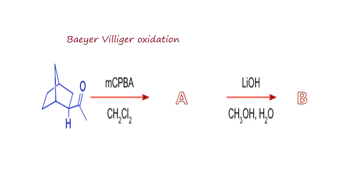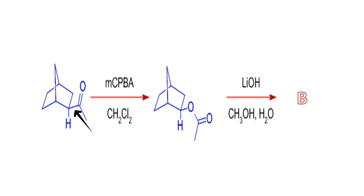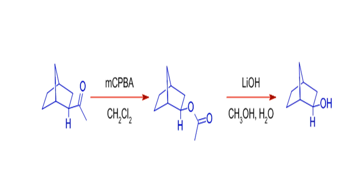The cyclic ring will migrate in preference to the methyl group, so that oxygen is inserted here to form this ester. Under basic conditions of lithium hydroxide, or any other hydroxide like NaOH or KOH, hydrolysis of the ester takes place to form this alcohol and acetic acid.